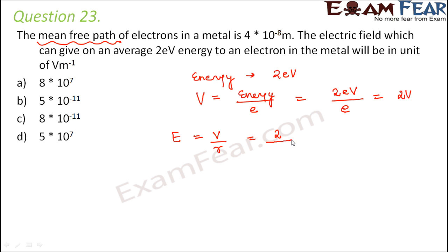So V is 2 volts and what is R? Mean free path which is 4 into 10 to the power minus 8. So this becomes equal to 0.5 into 10 to the power 8 volt per meter, or you can say 5 into 10 to the power 7 volt per meter. So D is the right option.